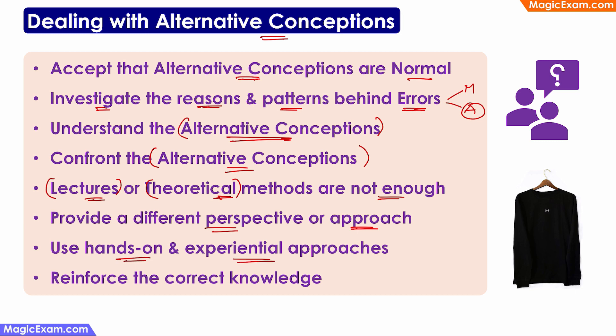For example, if you want to tell children why they should not wear black colored clothes in summer, because their parents or community would have told them a specific reason they deeply believe, lectures and theoretical methods are not enough. You have to show them with an experiential approach why black color absorbs more heat. Once they have been given an alternative perspective and understand the scientific approach, that knowledge should be reinforced, because only through reinforcement and revision does knowledge become stronger. These are the basic steps in dealing with alternative conceptions, preconceptions, or misconceptions in the classroom.